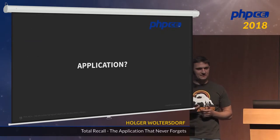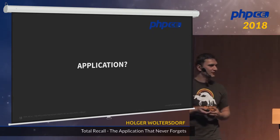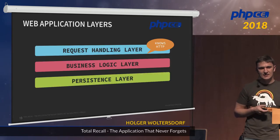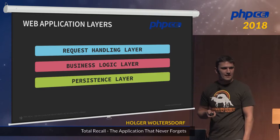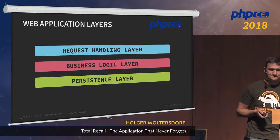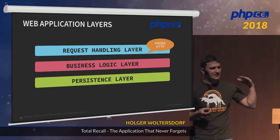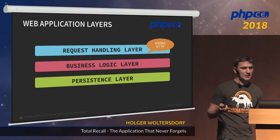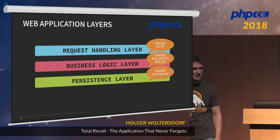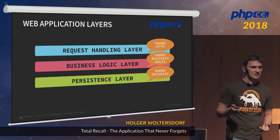What is an application? We are PHP developers writing web applications. A typical web application has three layers: a request handling layer, a business logic layer, and some kind of persistence layer. The request handling layer knows HTTP, the business logic knows the business rules, and the persistence layer knows the database. The good news is you can apply CQRS to all of them.